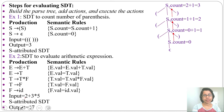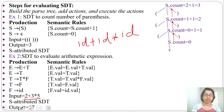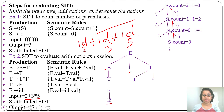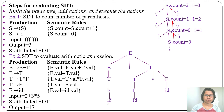Let me construct the derivation tree for 2 + 3 * 5, treating it as id + id * id with lexical values 2, 3, and 5. From E I derive E plus T using leftmost derivation. From E I derive T, from T I derive F, from F I derive id. For the right part, from T I derive T multiplication F, from T I derive F, then from F I derive id. The third id comes from the last F.